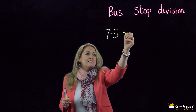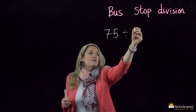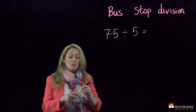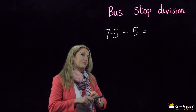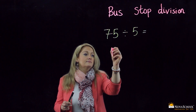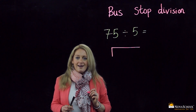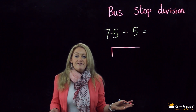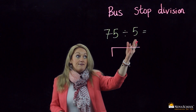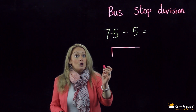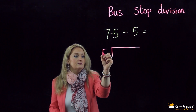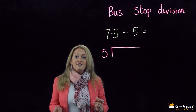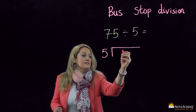75 divided by 5. Okay, now what do we do? We draw the bus stop. Okay, where do we put the numbers? Well, the number you are dividing by — five — goes outside. Watch. Now where do we put the 75? Inside the box. Watch.